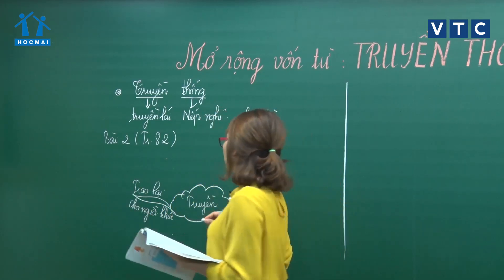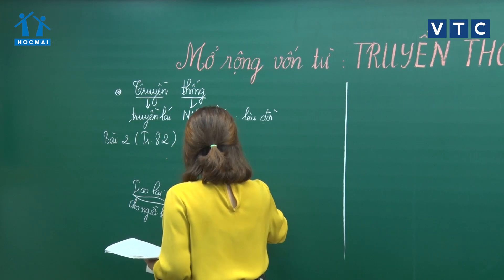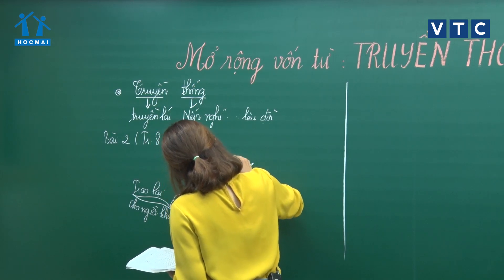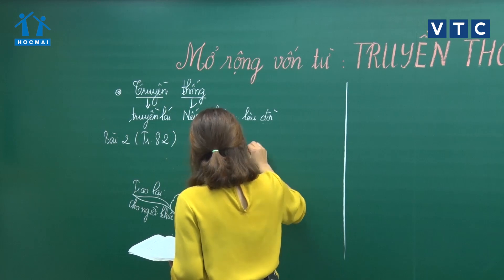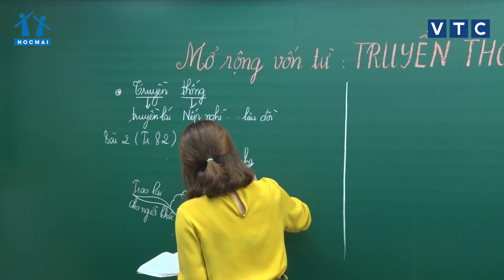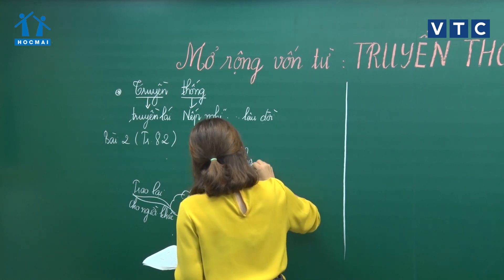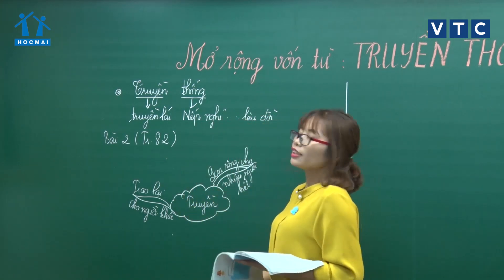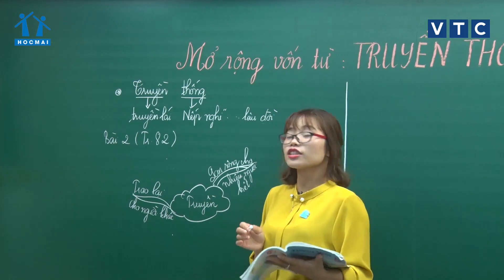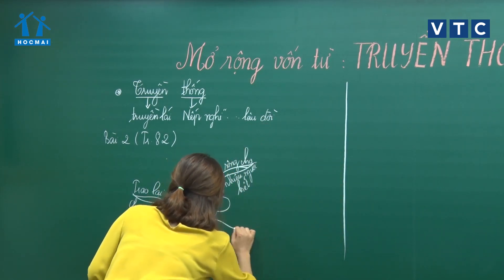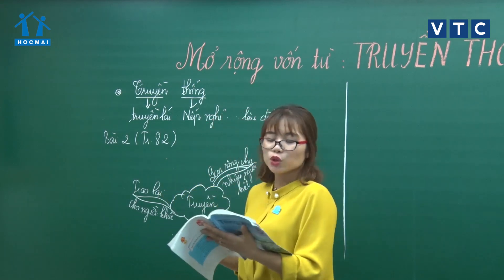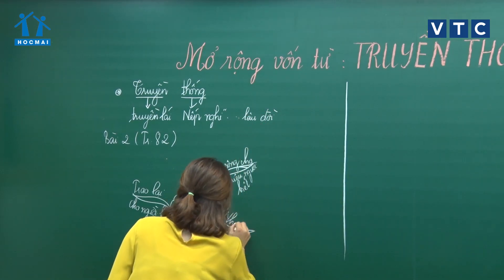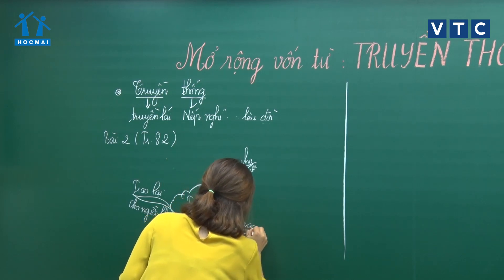Nghĩa thứ 2 của từ truyền là làm lan rộng cho nhiều người biết. Các con có thể kẻ bảng ra cho dễ nhìn, hoặc như cô muốn làm bằng sơ đồ tư duy. Nghĩa thứ 3 là truyền có nghĩa là nhập vào, hoặc là đưa vào cơ thể.